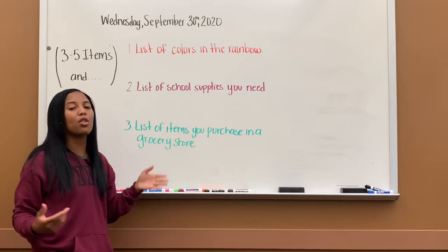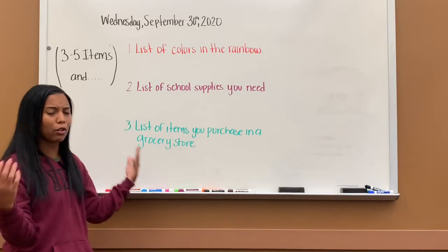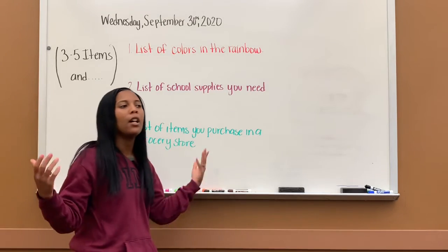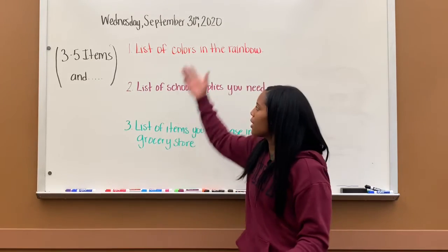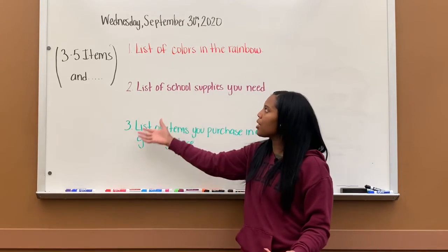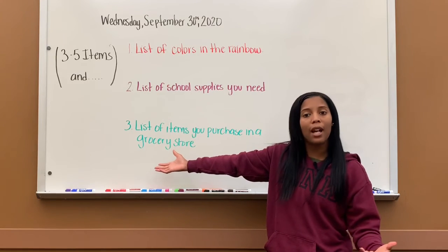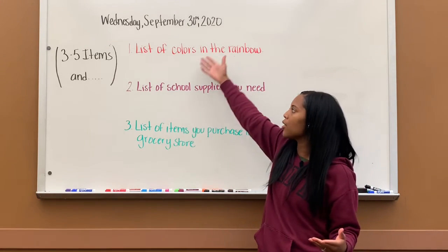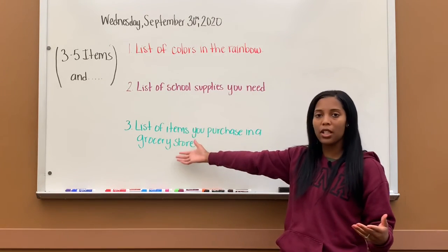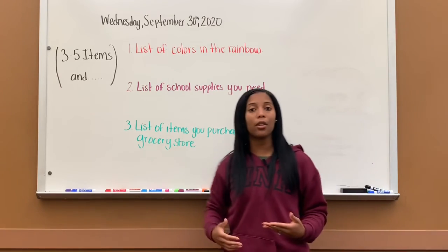Number three is a list of items you will purchase in a grocery store — you went grocery shopping, what are some things you would buy? So that's what you have to do today: creating your own sentences with commas in a series. These are the instructions of what each sentence should look like. That's your writing lesson today.